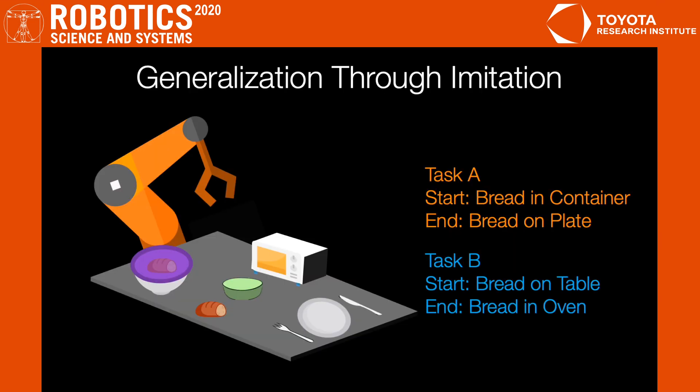Consider the setup here. In the first task, the bread starts in this container, and the robot needs to remove the purple lid, retrieve the bread, put it into this green bowl, and then serve it on the plate. In the second task, the bread starts on the table, and it needs to be placed in the green bowl, and then put into the oven for baking. We provide the robot with demonstrations of both tasks.